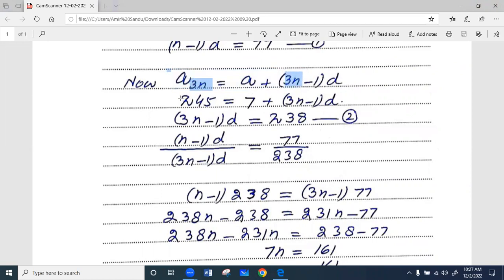तो a_3n की value given है जो कि 245 है. a की जगह 7 plug-in करें और (3n-1)d, तो 245 minus 7, this way हमारे पास एक दूसरी equation आ गई.